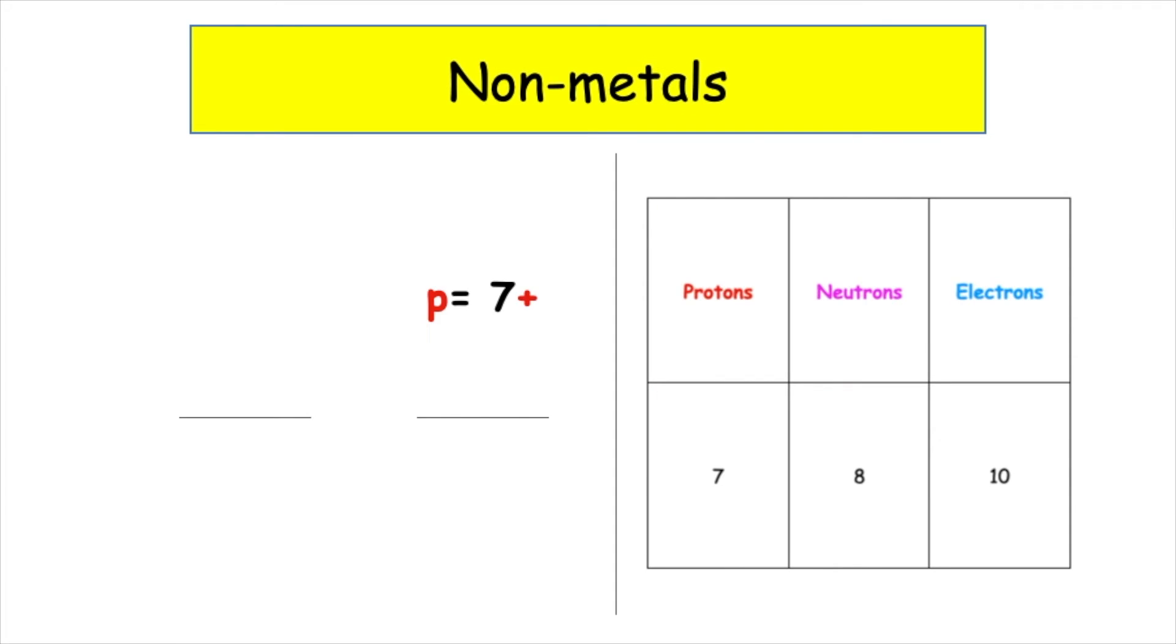In this example, we're given 7 protons, which means the atomic number of this element is 7, which is nitrogen with the chemical symbol N. We're given 8 neutrons; 7 plus 8 gives us a mass number of 15. We're given 10 electrons, so if we do 7 positive plus 10 negative, that gives us a 3 negative charge, so this is an N3- ion.